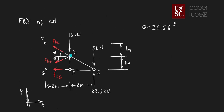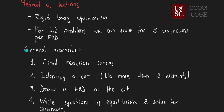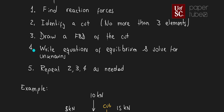It is not required to only use sum of moments — you can also use sum of forces in X or Y, and depending on the problem those may be easier to solve. To summarize the general procedure for the method of sections: (1) find your reaction forces; (2) identify a cut — the rule of thumb is no more than three elements; (3) draw a free body diagram of the cut; (4) write equations of equilibrium and solve for unknowns; and (5) repeat steps 2–4 as needed if more forces are required.